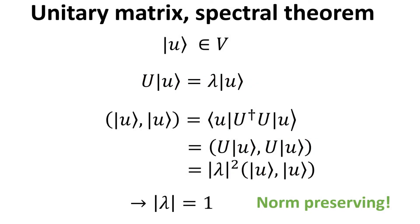It is also straightforward to prove that the eigenvalue of a unitary matrix has modulus 1. Let the eigenvalue be lambda and the eigenvector be ket u. We begin by writing the inner product of ket u with itself. One can insert the product U dagger U, since this is just the identity. By associating U dagger with the bra and U with the ket, we write it in inner product form. Making use of the diagonalization equation, we replace matrix U with its eigenvalue lambda. Hence, we arrive at the result that the modulus of the eigenvalue is 1. This also demonstrates that unitary operation on a ket preserves its norm, which is one reason why it is so commonly used in quantum mechanics.